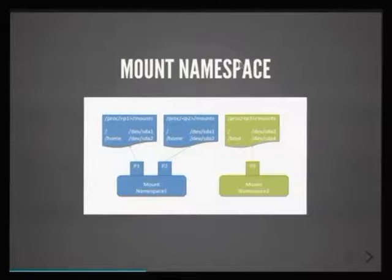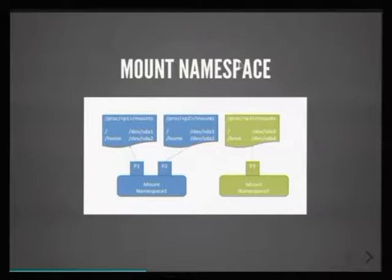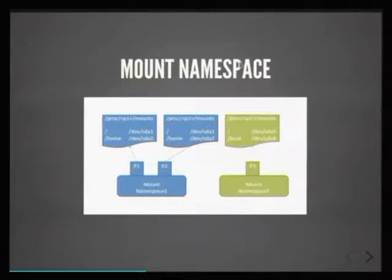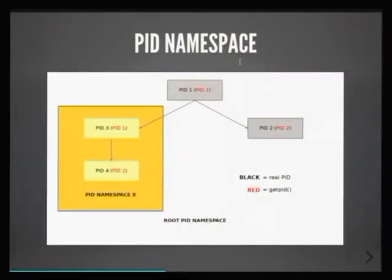For example, the mount namespace — how it works. There's one mount namespace, and it sees these things. It's process one and process two, and they have these mount points. And there's another mount namespace, and it sees a completely different world, because they are totally different. Whatever action you do in one of the mount namespaces is not propagated anywhere — it stays in the namespace. So if you start another process in mount namespace two, it will see that view. If you do changes there, they will never be propagated to the other namespace, which is pretty useful and isolates the file system.